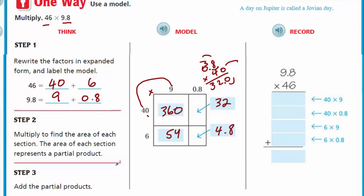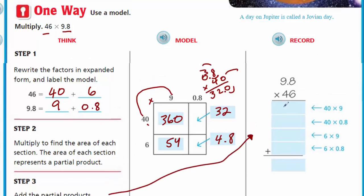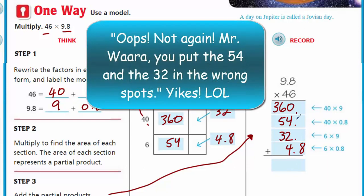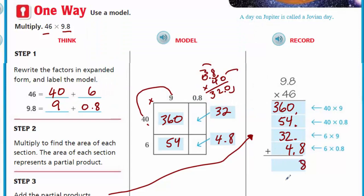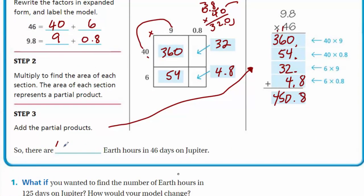Step three says add the partial products. Let's go ahead and put our partial products in. We have 360, 54, 32, and 4.8. I need to make sure I line up my decimals. I want my decimals in a line. Here I have my 8 and I bring my decimal right there. Now I'm adding up. I've got 6 and 10. Zero. I've got to carry my one. 15. Voila. 450.8.